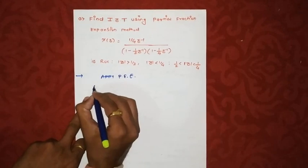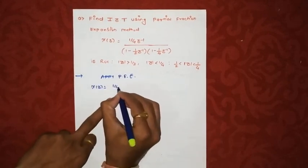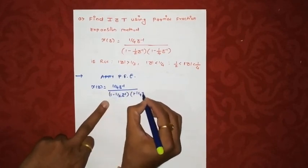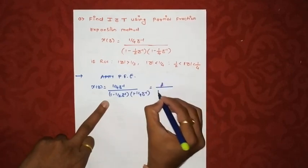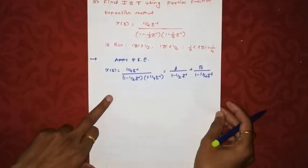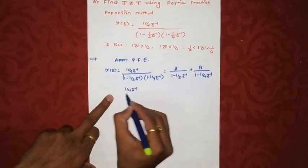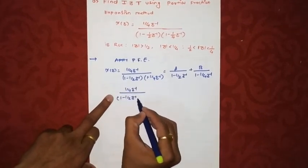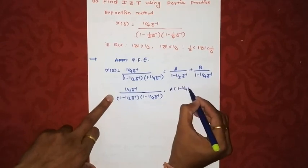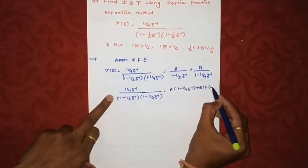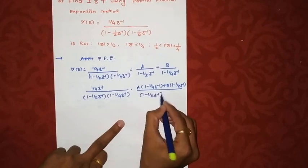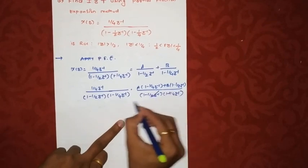The first step is to apply partial fraction expansion. We write X(z) as (1/4 · z⁻¹) / [(1 − (1/2)z⁻¹)(1 − (1/4)z⁻¹)], which equals A/(1 − (1/2)z⁻¹) plus B/(1 − (1/4)z⁻¹). Simplifying, we expand the right-hand side. The common denominator terms will cancel.